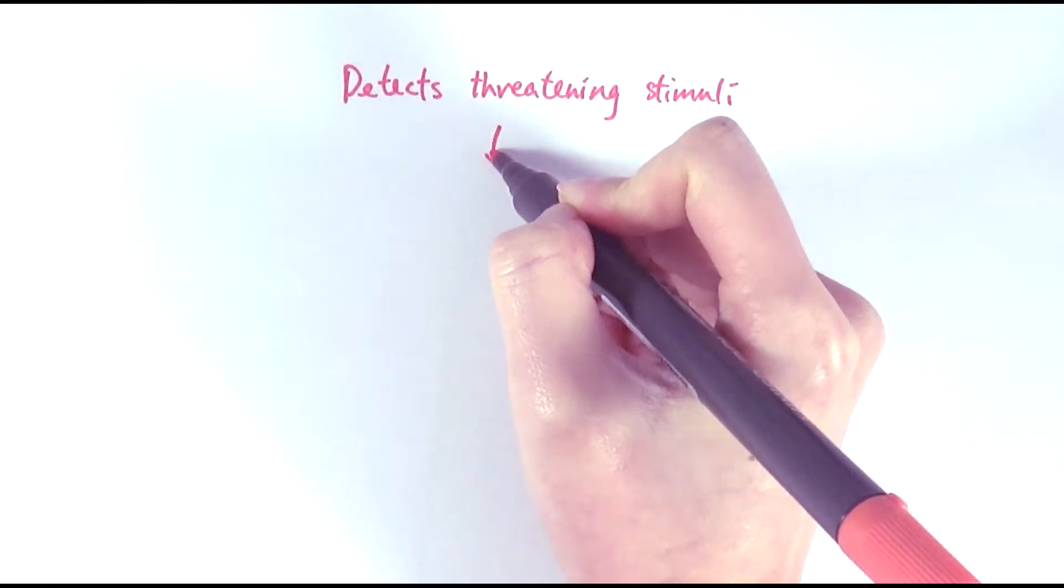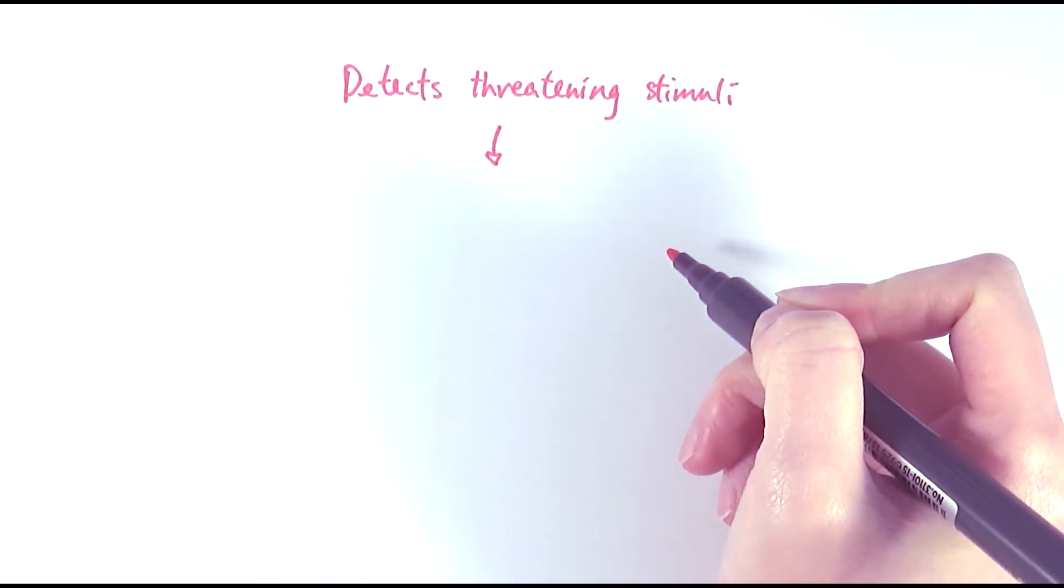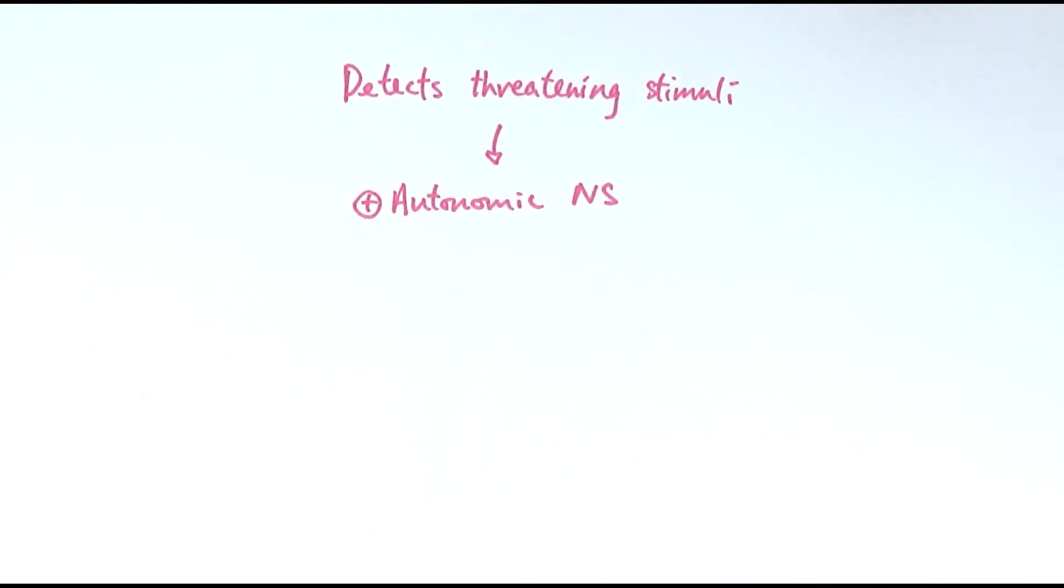Once you detect the threatening stimuli, that would activate or stimulate the autonomic nervous system, which is the nervous system that is able to coordinate all the automatic or subconscious actions. In this case it would signal the hypothalamus to do different things.